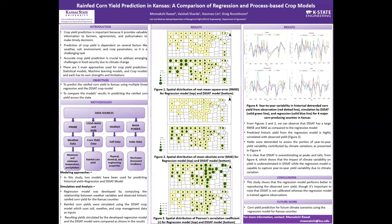Therefore, this study is undertaken with the following objectives. First, to predict the rain-fed corn yield in Kansas using multiple linear regression and the DSSAT crop model. Second, to compare the model's results in predicting the rain-fed corn yield across the state.